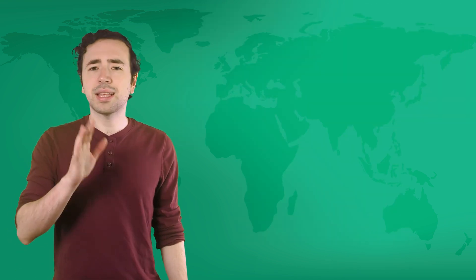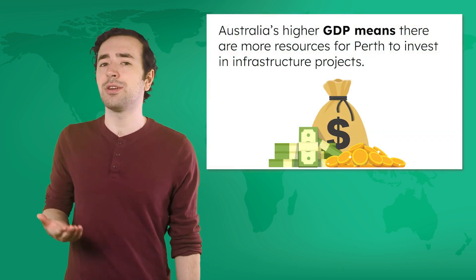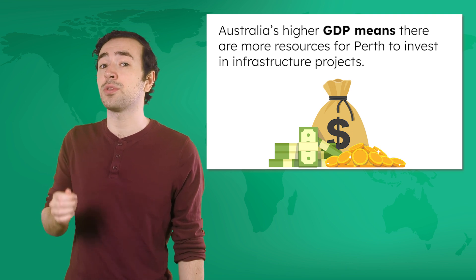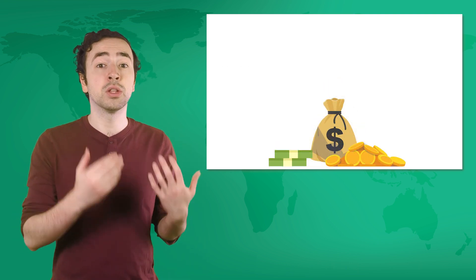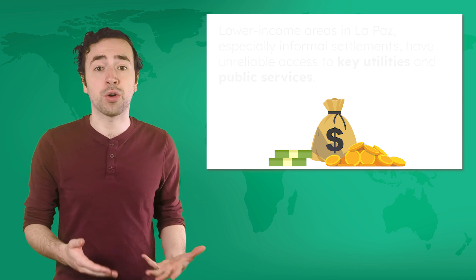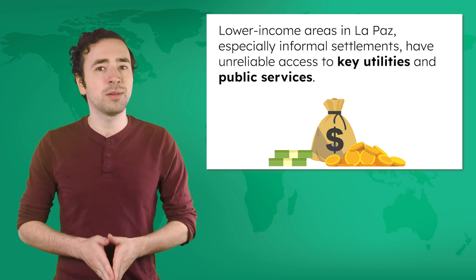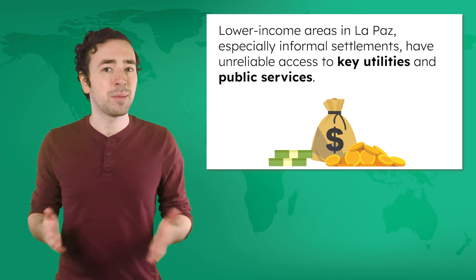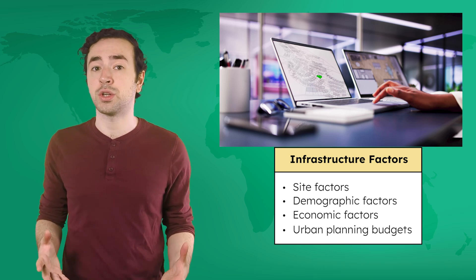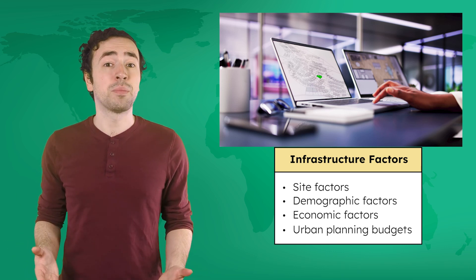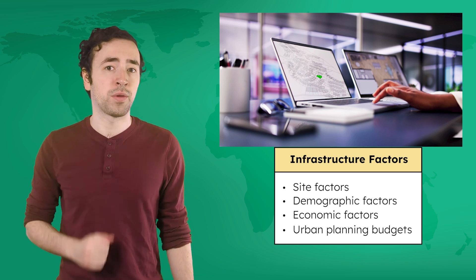Something to note is that these two cities are at different levels of economic development. Australia's higher GDP means there are more resources for Perth to invest in infrastructure projects. Bolivia's relatively lower GDP makes funding infrastructure projects harder. Lower-income areas in La Paz, especially informal settlements, have unreliable access to key utilities and public services. That's why urban planners consider these factors when planning infrastructure — with limited budgets, they have to prioritize the infrastructure that's most important for their residents.